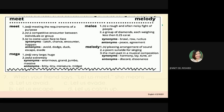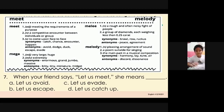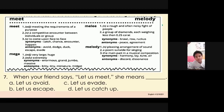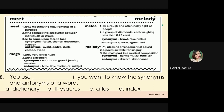Number 7: When your friend says 'Let us meet,' she means — A. Let us avoid. B. Let us escape. C. Let us evade. D. Let us catch up. Number 8: We use blank if we want to know the synonyms and antonyms of a word. A. Dictionary. B. Thesaurus. C. Atlas. D. Index.